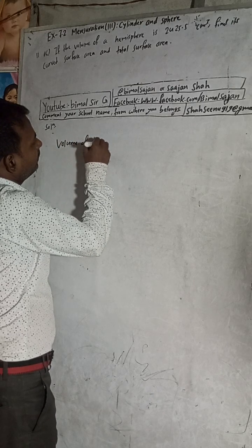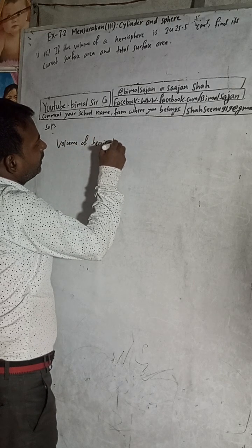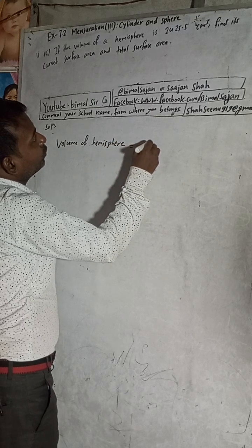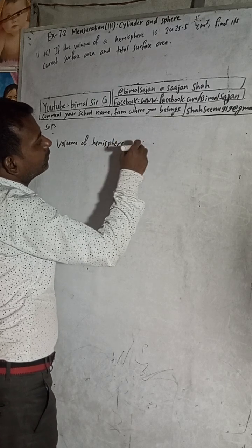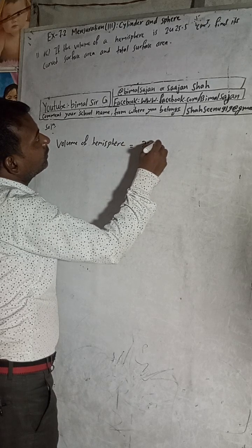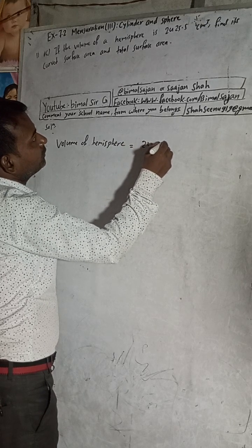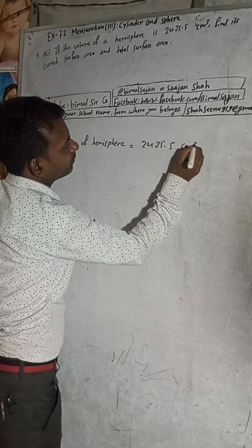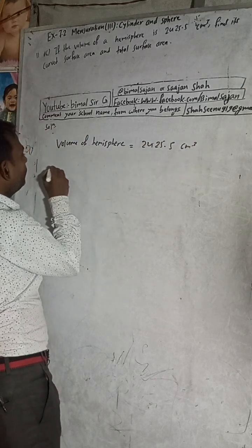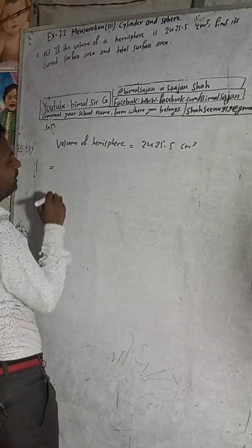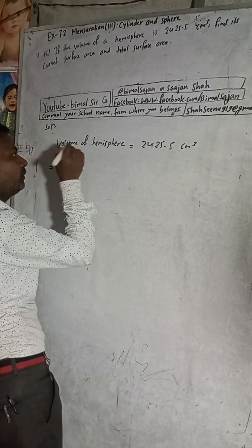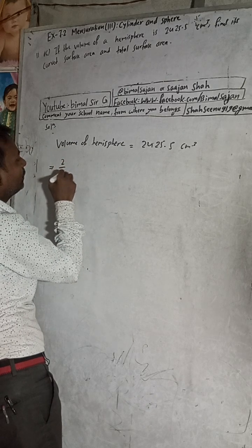Volume of hemisphere is given as 2425.5 cm³. The formula for volume of hemisphere will be 2/3 πr³, because for a sphere it's 4/3, but for hemisphere it's 2/3.